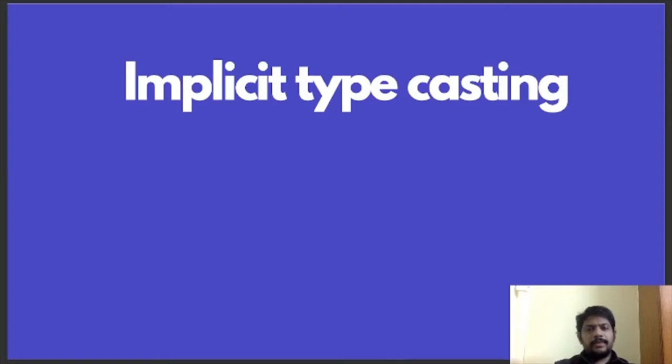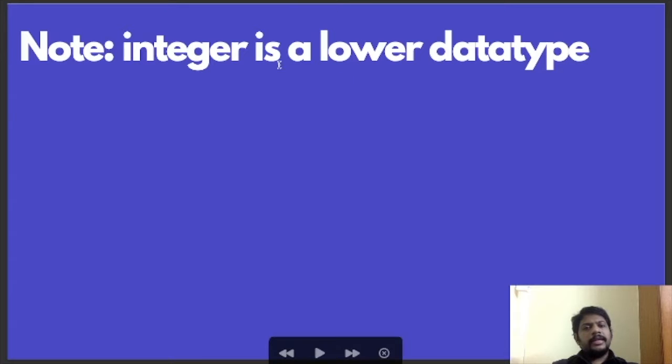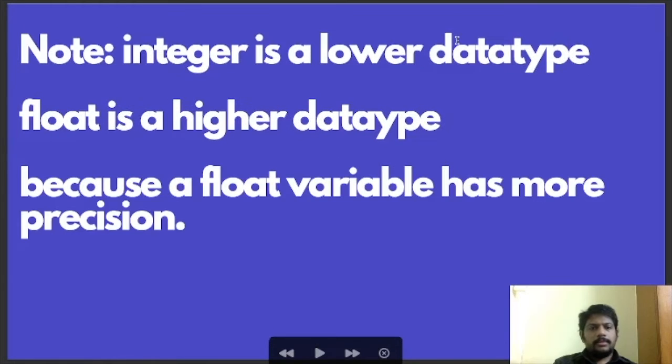Before discussing implicit typecasting, we need to understand that integer is a lower data type when compared to float data type.